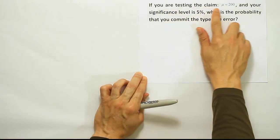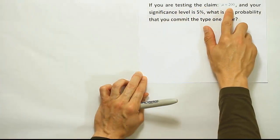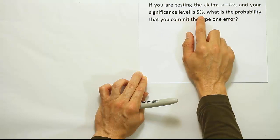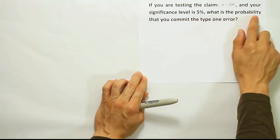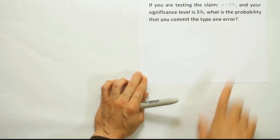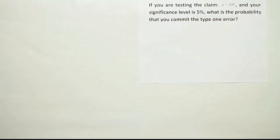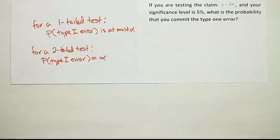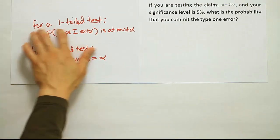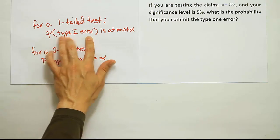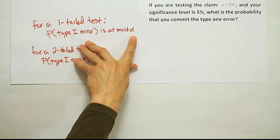If you are testing the claim that the mean is equal to 200 and your significance level is 5%, what is the probability that you commit a Type 1 error? Well, remember we have this rule which says that for a one-tailed test, the probability of a Type 1 error is at most alpha.